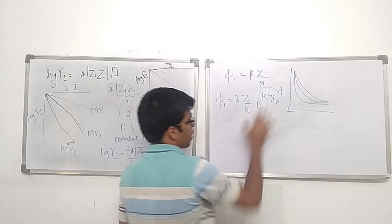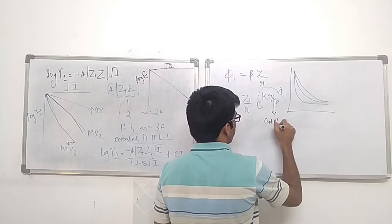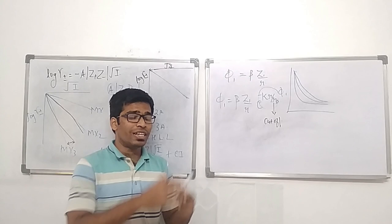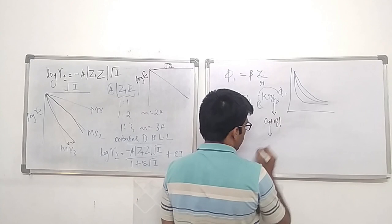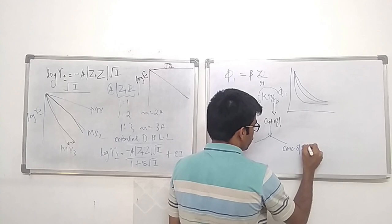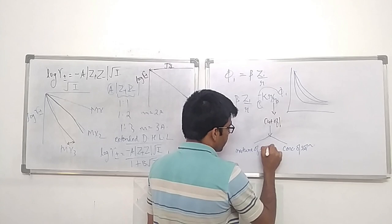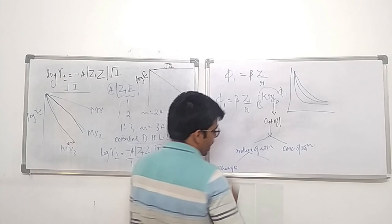The exponential decrease occurs because of the r/r_D factor. This r_D is a kind of cutoff — after this point, the electric potential decreases exponentially and very quickly. This cutoff depends on two things: first, the concentration of the solution; second, the nature of the solution, which includes the charge and the permittivity of the solution.